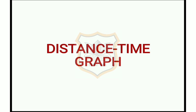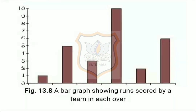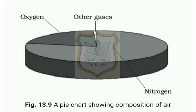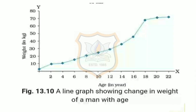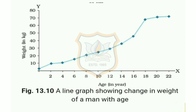The type of graph shown in figure 13.8 is known as a bar graph. Another type of graphical representation is a pie chart, as seen in figure 13.9. The graph shown in figure 13.10 is an example of a line graph. The distance-time graph is a line graph.